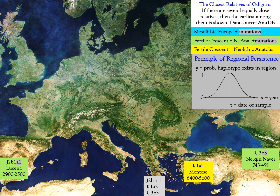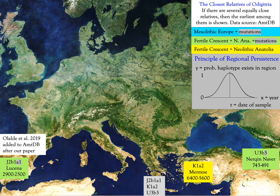We found perfect matches for each of the haplogroups at Odigitria. The one at Spain was added to the database in 2019, so this is a slight update from our paper. We indicate samples from Mesolithic European hunter-gatherers using the color blue, samples from the Fertile Crescent and Anatolia using the color yellow, and samples that have a Fertile Crescent origin but were found elsewhere using green color.